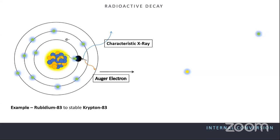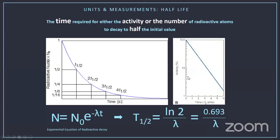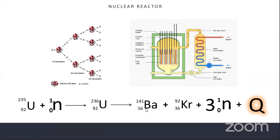Question: Where does the first neutron come from in fission? A slow (thermal) neutron bombards a uranium atom. The uranium then splits spontaneously into smaller elements such as barium and krypton, releasing additional fast neutrons that go on to bombard other uranium atoms, initiating the chain reaction.